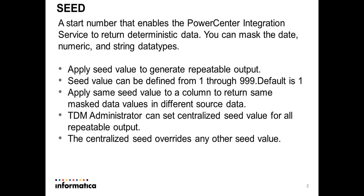Generally, the seed value is used to generate a repeatable output. For example, consider two tables: table 1 and table 2. Table 1 has a cust_id column and table 2 also has a cust_id column. If the requirement is to have the masked value in both tables for cust_id be the same, we can set the seed parameter to the same value, and the masked result for these two columns will be exactly the same. This helps us have common values across various datasets when the seed value is the same.